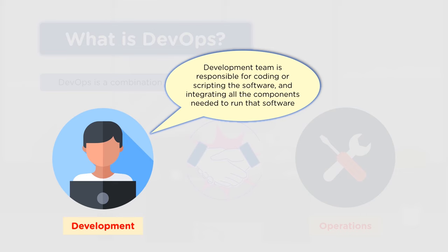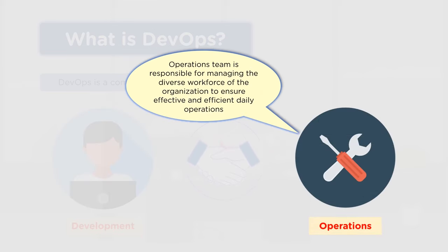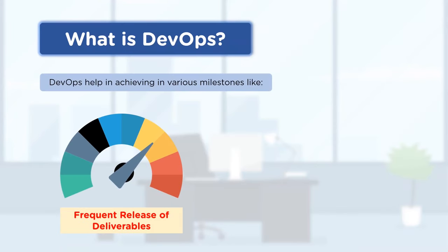From the operations perspective, it's basically a team responsible for managing the workforce and ensuring all daily activities and operations are managed effectively and efficiently. Operations teams are pretty much responsible for keeping the environment up and running and handling all activities and maintenance work.